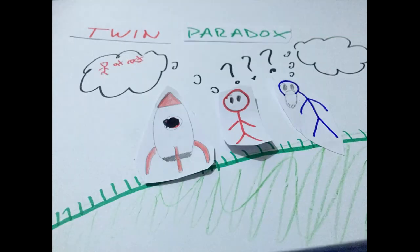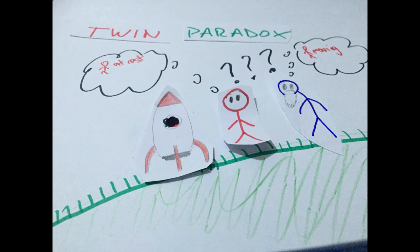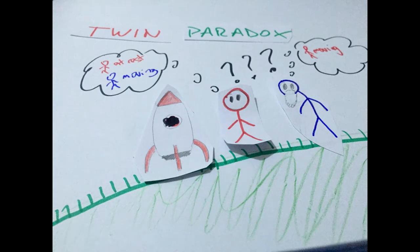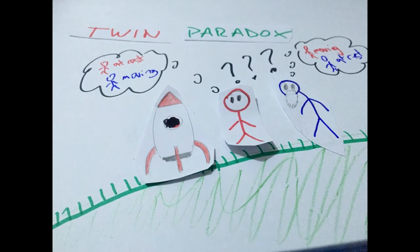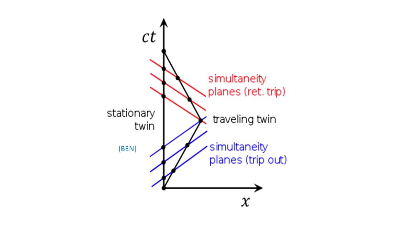From Ben's perspective, Alex is moving faster than him and should indeed be younger at the end. But from Alex's perspective, Ben is moving faster, so Alex should be younger at the end. The reason is because when Ben turns around to return to Earth, there is a change in his speed and direction.